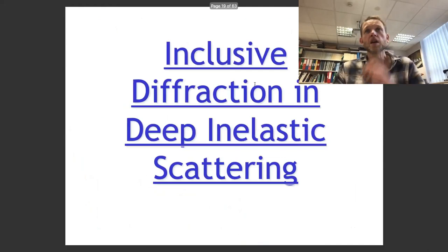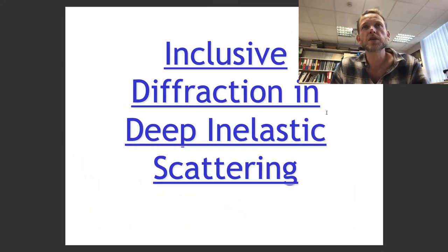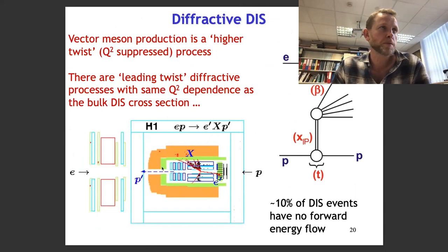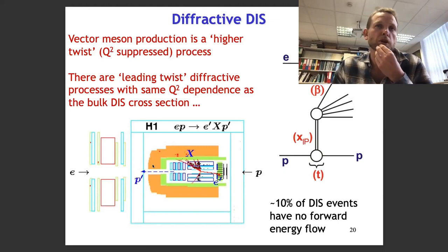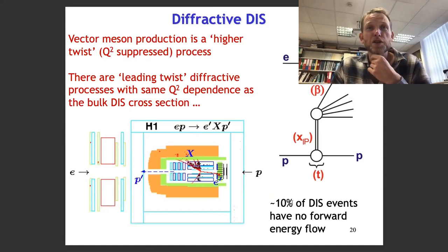Let me move on from exclusive processes to inclusive diffraction in deep inelastic scattering, looking at event displays like this one. This is ep → e + anything + p. The striking thing about this event display is that there's absolutely nothing in the calorimeter in the forward direction, indicating the proton has gone down the beam pipe not colour-connected to the rest of the hadronic final state in the central detector. There are no colour strings, no particle production in the forward direction. This sort of event was very exciting early in the HERA story, and as already mentioned, about 10% of deep inelastic scattering events are like this — so it's really a mainstream part of DIS.